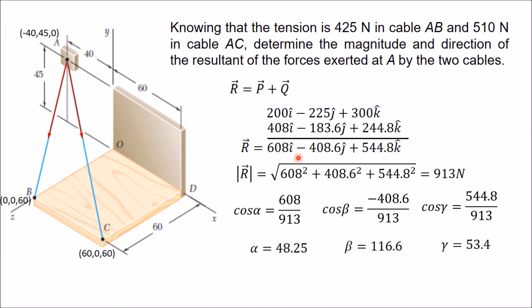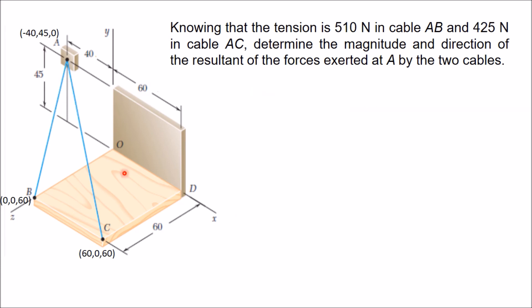So the resultant R has a magnitude of 913 N with x, y, and z components as calculated, and these are the direction angles. For homework, the same problem is slightly changed: the tension is now 510 N in cable AB and 425 N in cable AC. You have to determine the magnitude and direction of the resultant of forces at A. You can try this using the same method I explained.